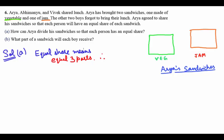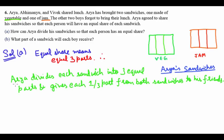The solution: share equally into three parts. We are dividing each sandwich into three equal parts. Assume them to be equal. Similarly for the jam sandwich, we are going to divide it into three equal parts again.